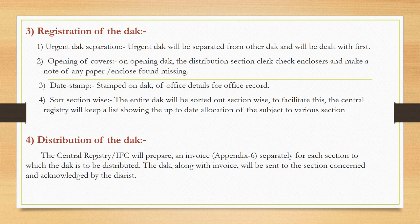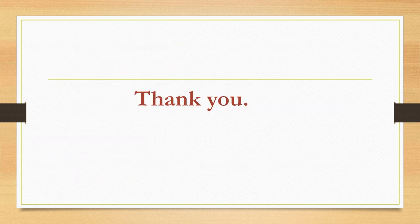After that, distribution of the dark: the central registry will prepare an invoice separately for each section to which the dark is to be distributed. The dark along with the invoice will be sent to the section concerned and acknowledged by the diarist. The central registry prepares section-wise invoices, distributes them, and records the acknowledgement.